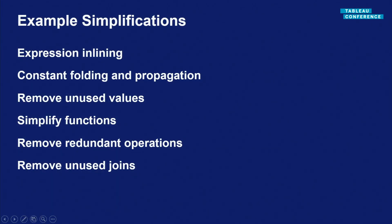So even in this simplest possible example, we saw expression inlining, constant conditional propagation, unused values removed, and redundant operators removed. We didn't see functions being simplified here — for example, a string function consistently using arguments 0 and 1 could be simplified to a prefix operation. And a really powerful simplification mentioned in several talks this week is removing unused joins, primarily where tables are in a star schema with a referential relationship.